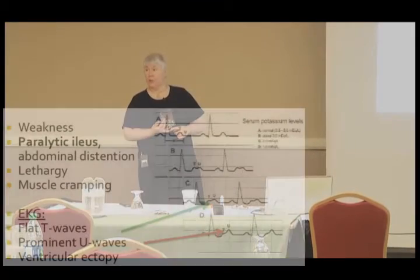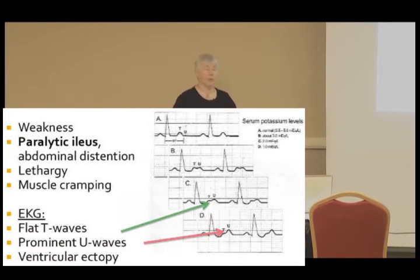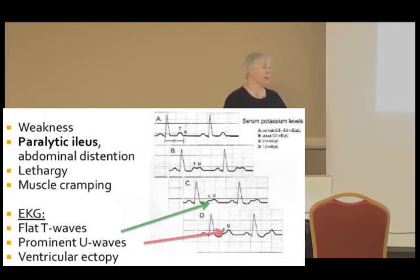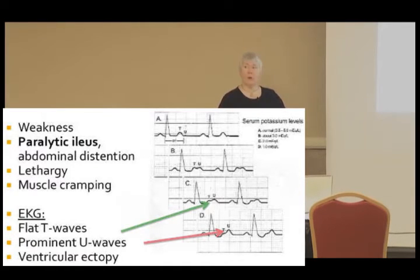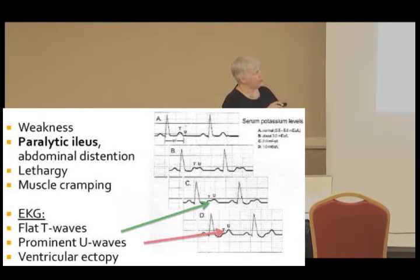Now let's go back to the 12-lead EKG looking for clues. On waveform A, we have normal sinus rhythm with a potassium level of 3.5 to 5. By waveform B, potassium is down to 3 and we start to see an elevation of the U wave — an extra bump in the T wave.